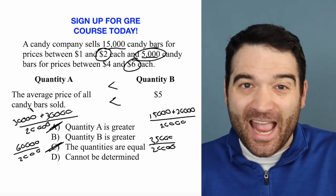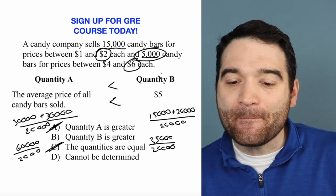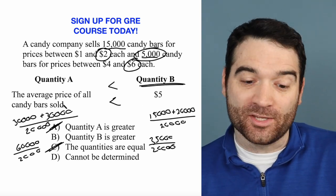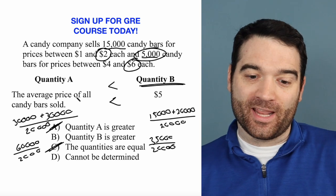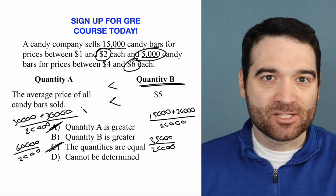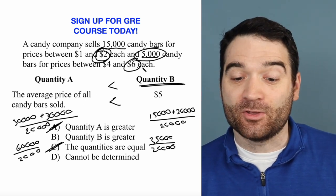Can we make this number any bigger? No, we can't. And that means quantity B is always greater than quantity A, because I went to the very maximum possible values that I could test.